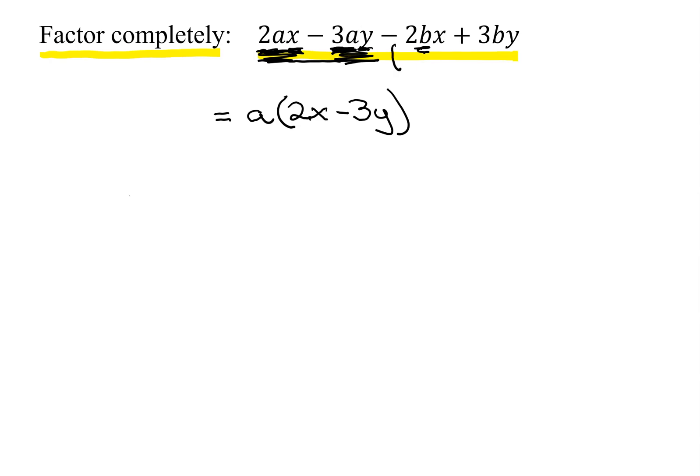Now you bring down the middle sign, which is a negative. And what do the last two have in common? I think the only thing they have in common is a B. And be careful, when you pull a negative out of several terms, you will flip both of these signs.